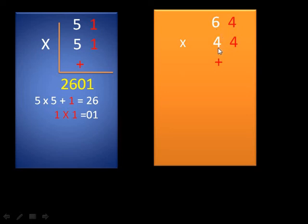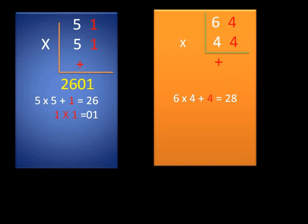Next example: 64 × 44. Here 6×4 = 24, and we add the unit digit 4, so 24 + 4 = 28. Then 4×4 = 16. So the answer is 2816.